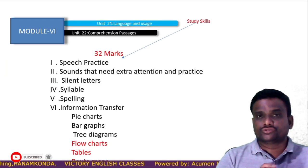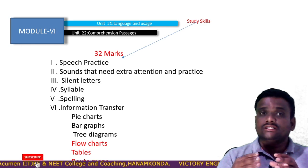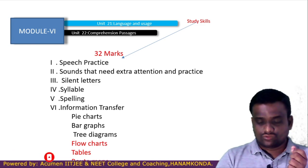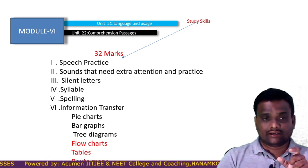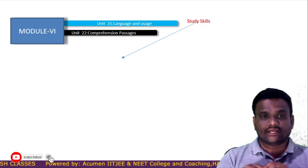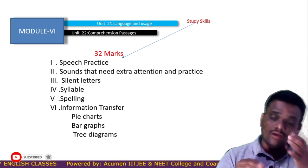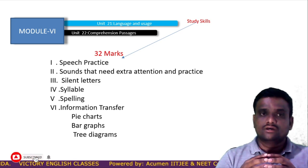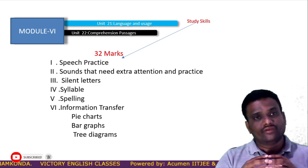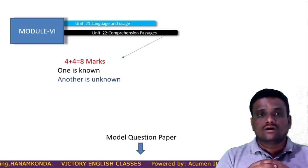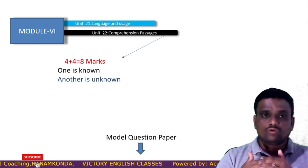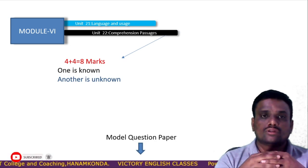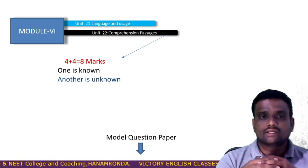The sixth module is language and usage. Through this particular unit, you will be getting 32 marks. If you go through the preparation of these, you will be getting 32 marks easily. Note that the red-colored titles were taken out of the syllabus. The sixth module language and usage is very, very important and these topics are very easy. Then comprehension passages: one passage is an unknown passage and another is a known passage. Through the comprehension passages, you will be getting 8 marks.